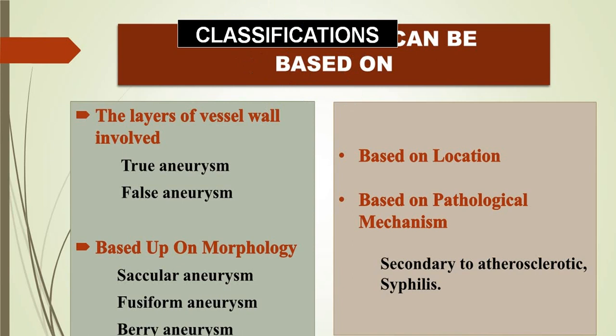Depending upon the shape, aneurysms are called saccular, fusiform, or berry aneurysms. Berry aneurysms are small, round aneurysms commonly seen in the cerebrovascular tree, mainly in the circle of Willis. Saccular aneurysm is a portion of an artery that is saccular in shape. Fusiform is an elongated dilated portion. There is also a pedunculated type, where there is a small stalk with an aneurysmal dilatation.